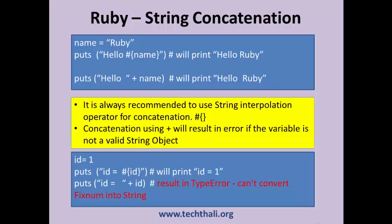In the following example, id is a numeric type and when we try to concatenate it with a string, we will get a type error.